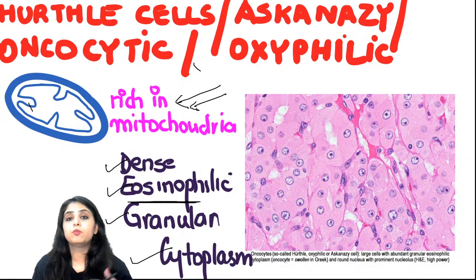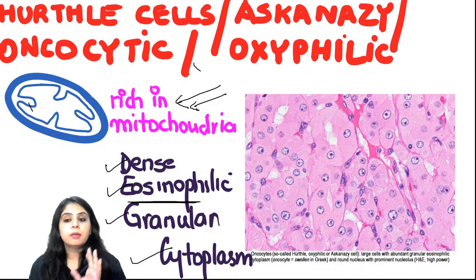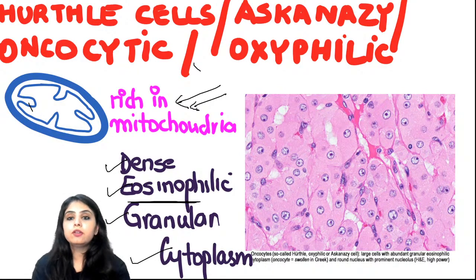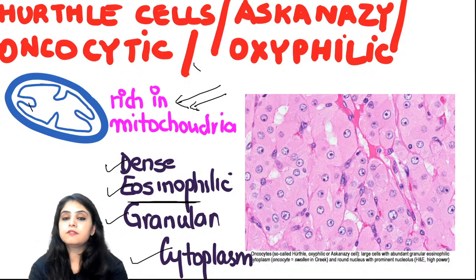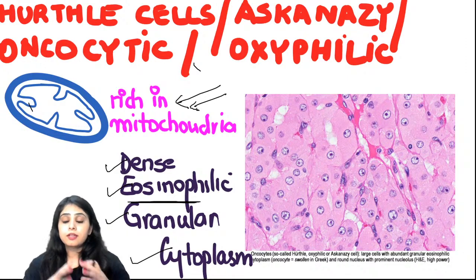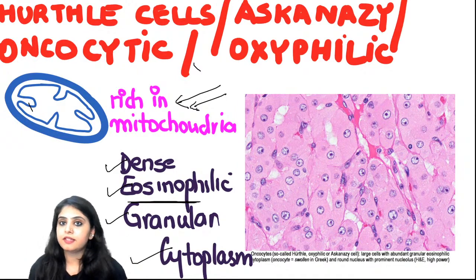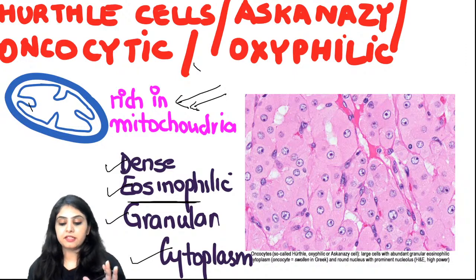So the follicular epithelial cells, initially tiny and cuboidal, have become big, swollen, and pink - those are the Hurtle or Askenazi cells. We'll see where they appear in diagnosis as we proceed.